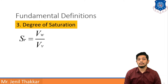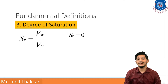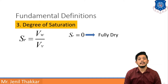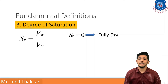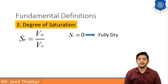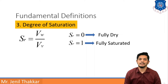If the Volume of Water is 0, as in fully dry soil, then SR will be 0. If the soil is fully saturated, all the voids will be covered by volume of water only, so VV equals VW, and VW cancels out, making SR equal to 1 for fully saturated soil. Generally, SR is expressed as a percentage value.